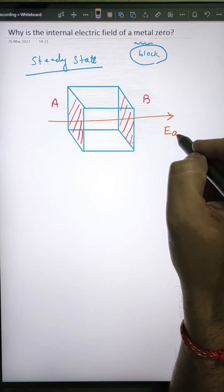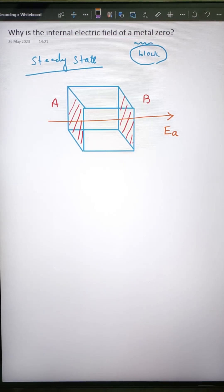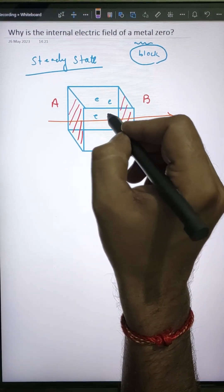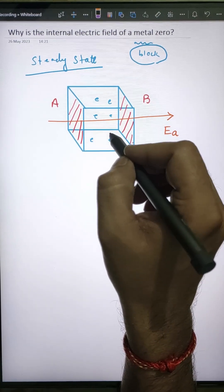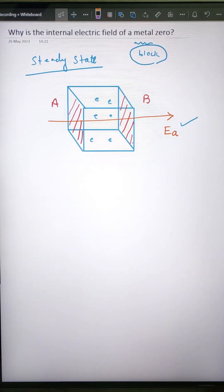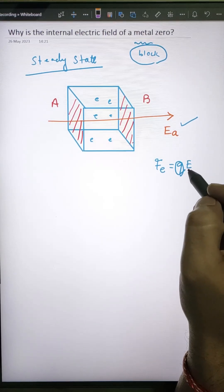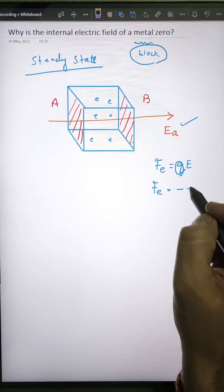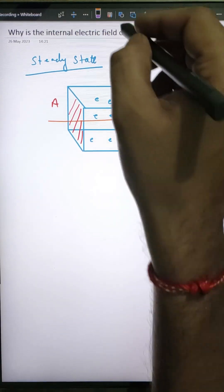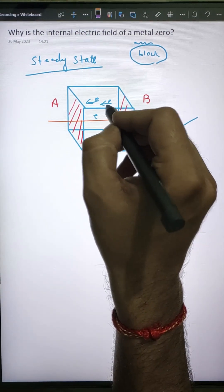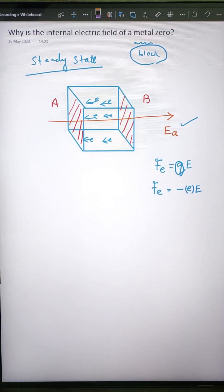The applied electric field E_a exists through the metal block from A towards B. There are free electrons inside — a metal basically consists of a lot of free electrons. These free electrons will experience a force because of this applied electric field. Since electrons are negatively charged, the force they experience would be negative times the charge magnitude times the electric field.